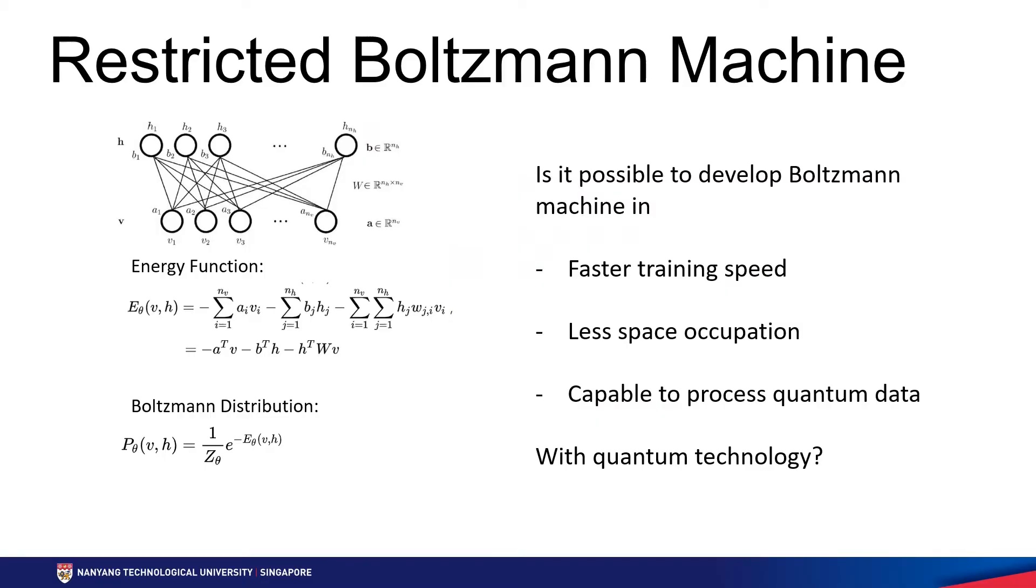Boltzmann machine, a variant of artificial neural network, is a typical model of machine learning which introduces a sample function inspired by Boltzmann distribution. In Boltzmann machine, a state function is defined as an analogy of energy and the system's state, when it is well trained, will be random but following the Boltzmann distribution to the energy.